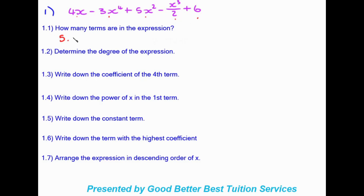They then ask us to determine the degree of the expression. The degree of the expression is your highest valued exponent. Looking at our powers, the highest exponent is 4 — that is x to the power of 4. So we write in our answer as just 4. That is the degree of the expression.